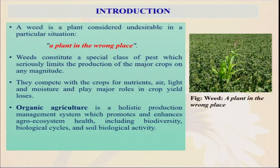Weeds constitute a special class of pest which seriously limits the production of major crops, and they compete with the crops because they are also plants. So they are staying together with the plants and always competing — competing for space, because they are growing within the same area; competing for light, whatever sunlight is available; competing for soil water; and also competing for nutrients. Most weeds are very hardy in nature, so they are competitively superior compared to crop plants. That is why in our agricultural system we have to always take care of weeds and control them so that significant crop damage is not done.